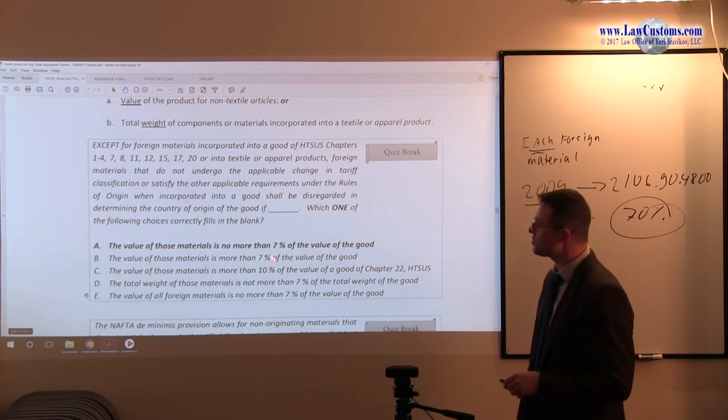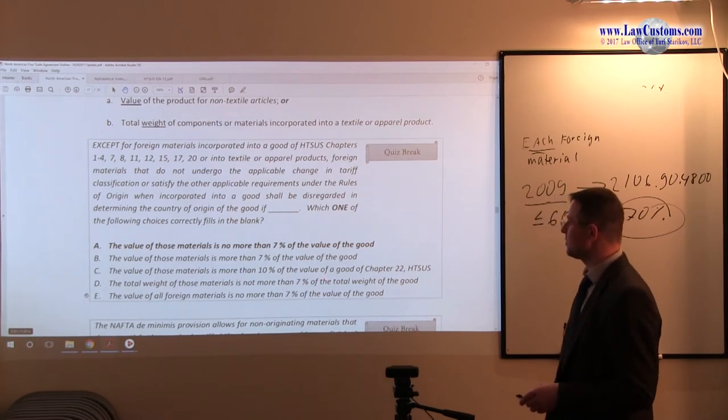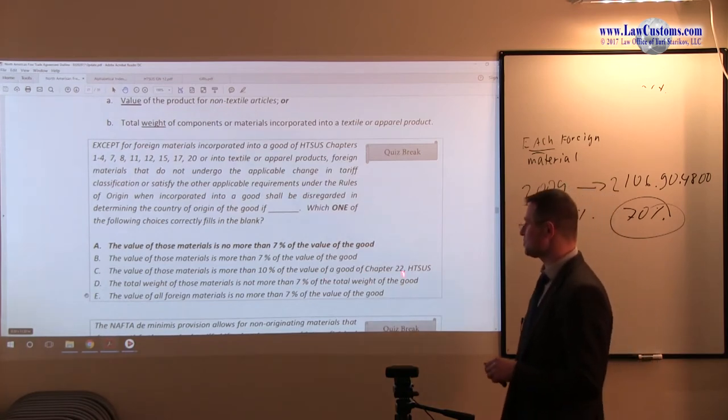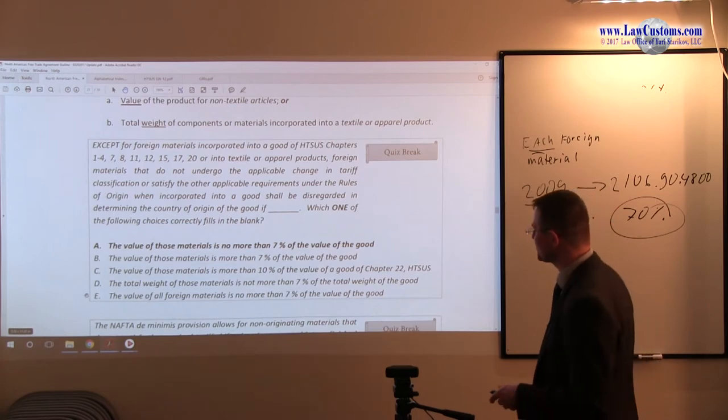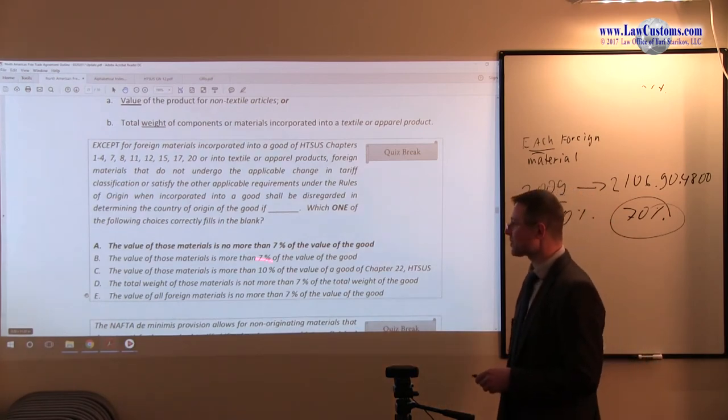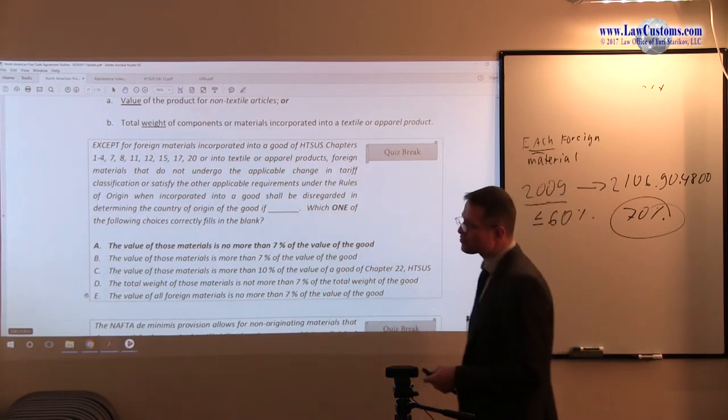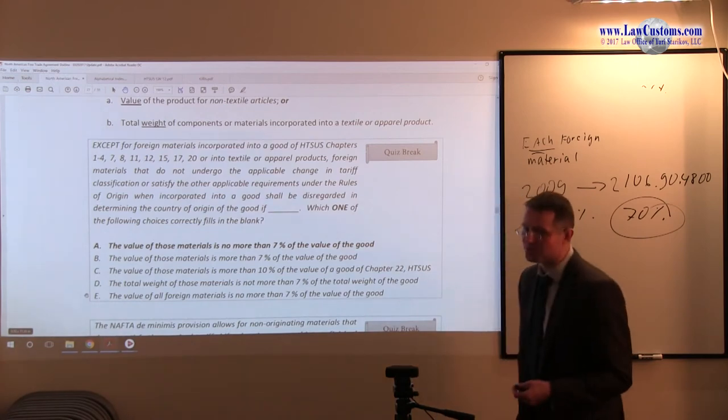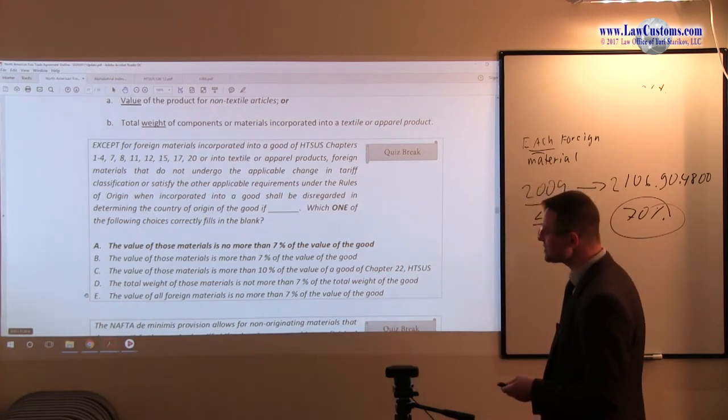There are exceptions but we are talking about the general rule here. The value of those materials is more than 10% of the good of chapter 22. We'll see that there is a special provision for chapter 22. It is 10% rule but it is actually 10% or less, not 10% or more. So C is not correct.